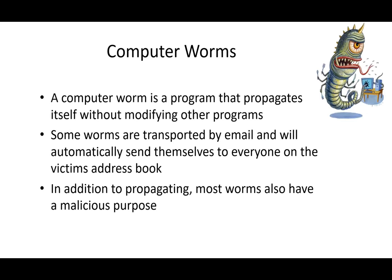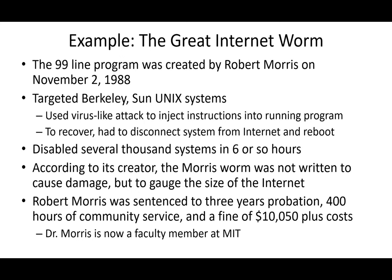A computer worm propagates itself — sometimes without needing to be executed by a user. Worms send themselves across networks, by email, or through open ports. The most famous is the Great Internet Worm of 1988, the first worm. Robert Morris at MIT created this 99-line program as a test — it worked all right, disabling thousands of computers for about a day. He was fined $10,000 and given 400 hours of community service. It didn't hurt his career — he went on to get a PhD and is now faculty at MIT teaching computer security.